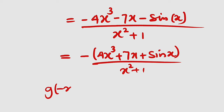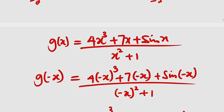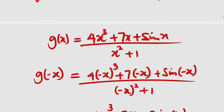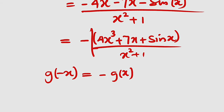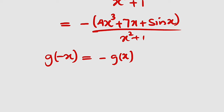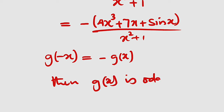Therefore g(negative x) is exactly negative g(x). Since g(negative x) = −g(x), g(x) is indeed an odd function. This confirms the first integral equals 0.